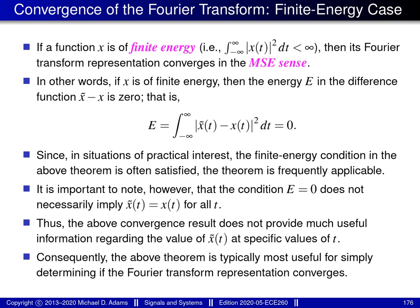The first theorem concerning the convergence properties of the Fourier transform relates to the case of finite energy functions. If a function x is of finite energy — in other words, this integral converges to a finite value — then the Fourier transform representation of x converges in the mean squared error sense, meaning this particular condition is satisfied. Here x represents our original function and x̃ represents the Fourier transform representation. Effectively, the energy in the difference between these two functions is equal to zero. The condition of finite energy is normally satisfied in practice, because we usually deal with functions that have finite energy.